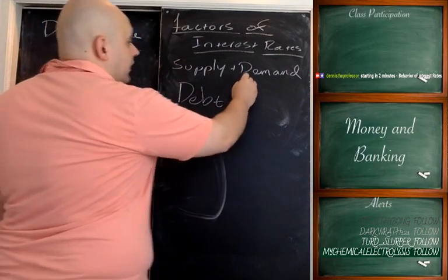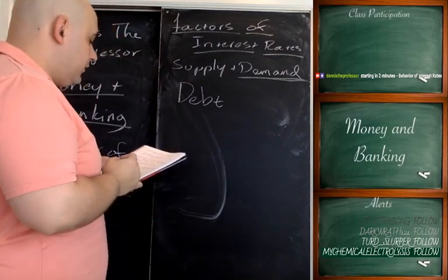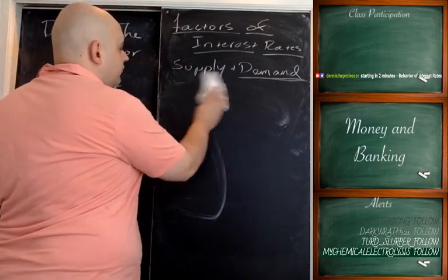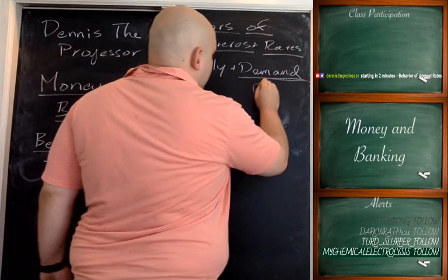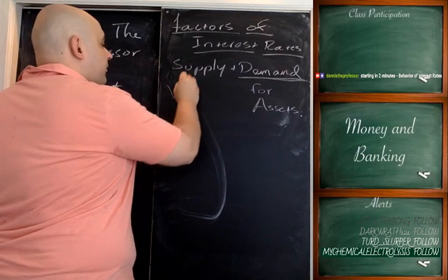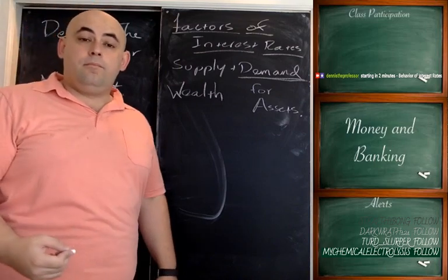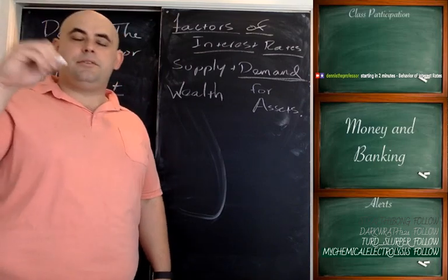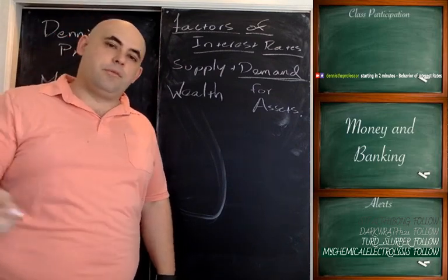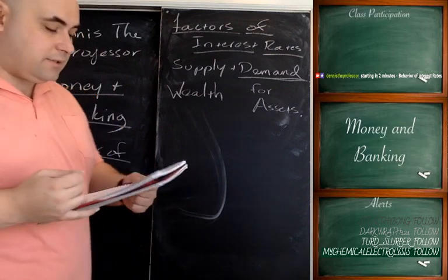What increases demand for an asset? Think about this and write down a few things. The first factor affecting demand for assets is wealth. This is almost a no-brainer — as you become more wealthy, you buy more things. For the majority of people, as they become more wealthy, they demand more assets.